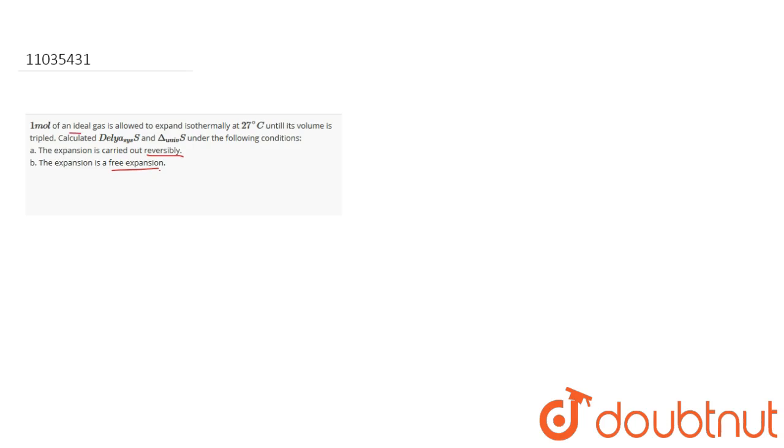One mole of an ideal gas is allowed to expand isothermally at 27 degrees Celsius until its volume is tripled, i.e., V2/V1 = 3 according to the question.